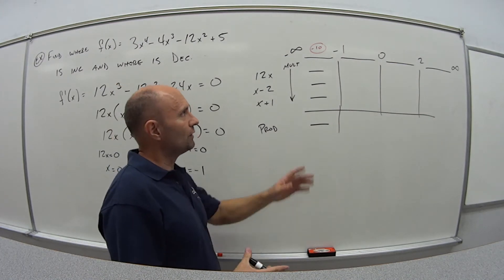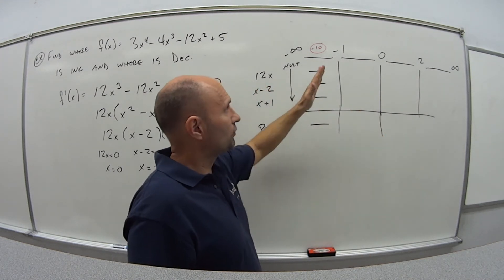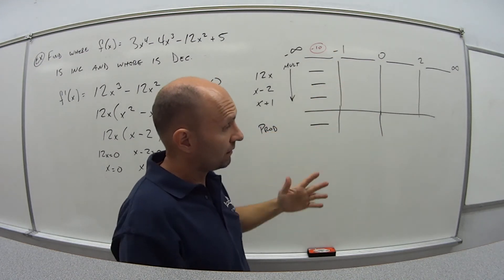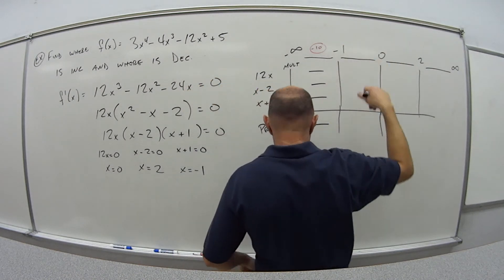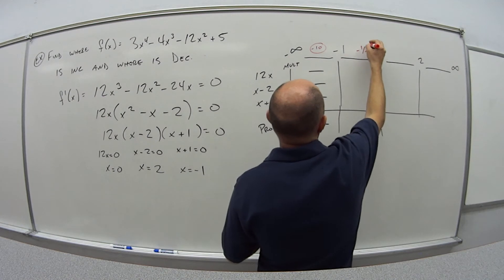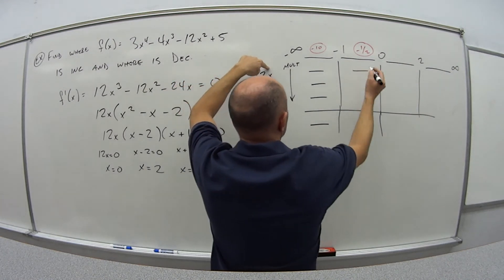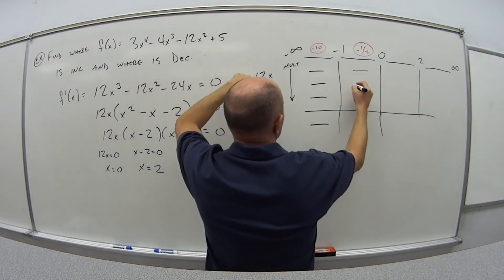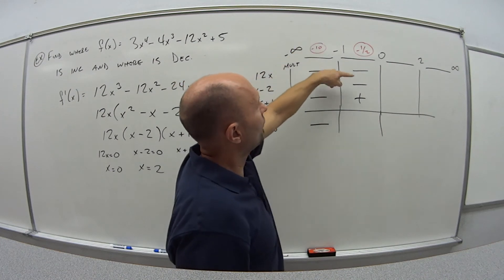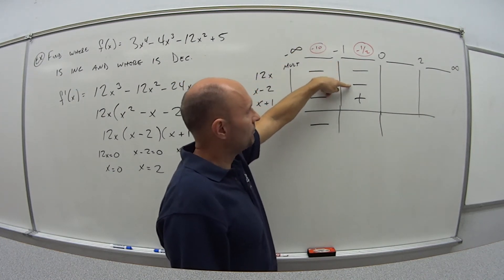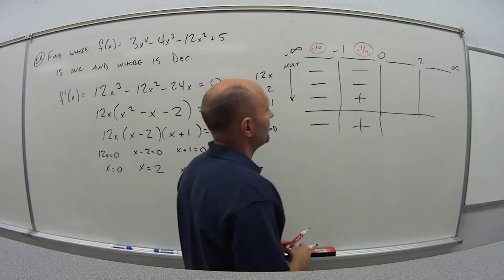If the function is decreasing before negative 1 and negative 1 is a critical point, the next interval should be positive — the function changes from decreasing to increasing there. Let's check: pick x equals negative one-half. 12 times negative one-half is negative; negative one-half minus 2 is negative; negative one-half plus 1 is positive. Negative times negative is positive; positive times positive is positive. That's what I wanted to see.